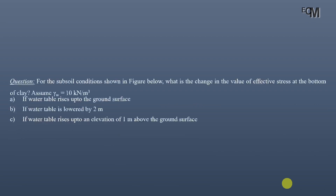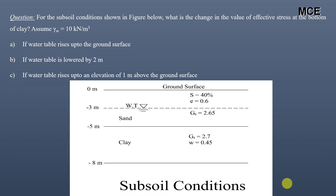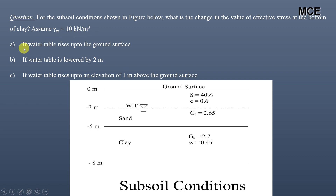Hello and welcome back to Master Civil Engineering. In this video we will learn what will be the change in the effective stress when the level of the water table fluctuates in the ground. The given question states that for the subsoil condition shown in the figure, we have to find the change in the value of the effective stress at the bottom of the clay, assuming the unit weight of water is 10 kN/m³, if the water table rises up to the ground surface.